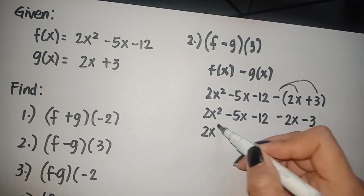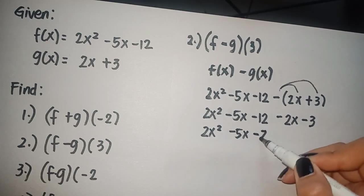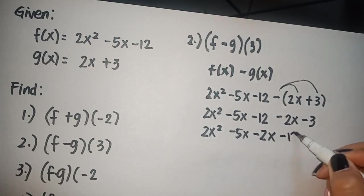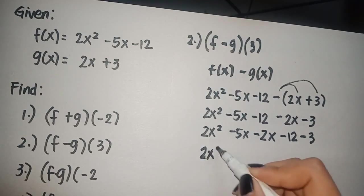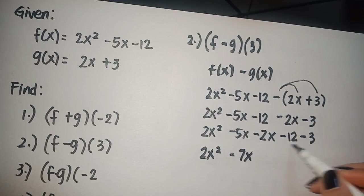Combine similar terms. We have 5x minus 2x minus 12 minus 3. If they have common sign, you have to add, then copy the common sign, that is negative.